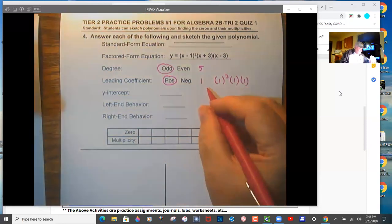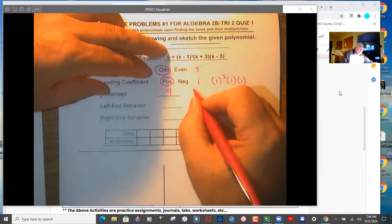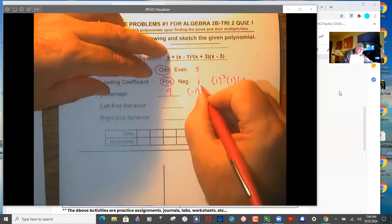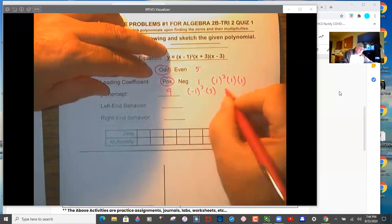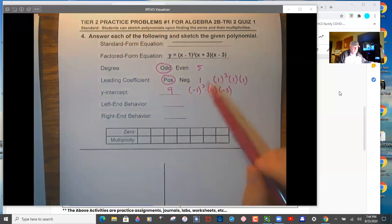Y-intercept is nine. So that's negative one cubed times three times negative three. So negative one cubed is negative one times three times negative three would be positive nine. Those two negatives would make a positive.